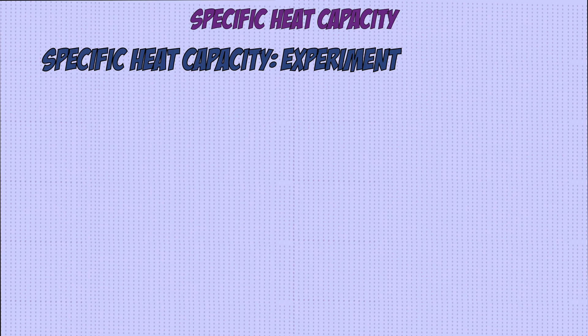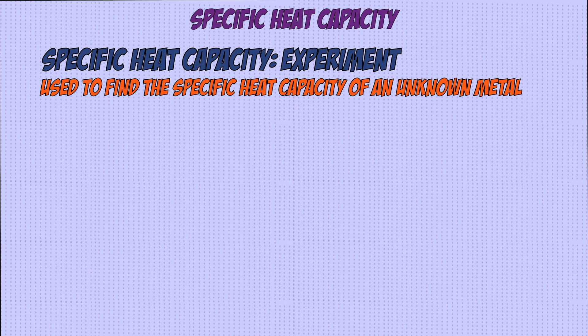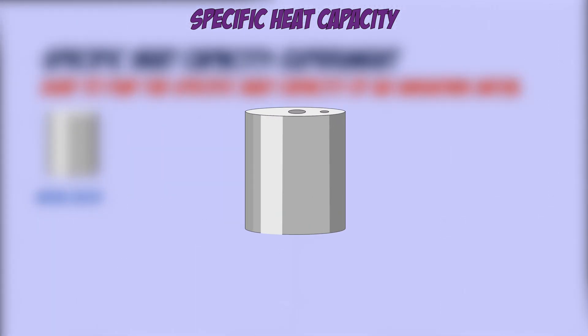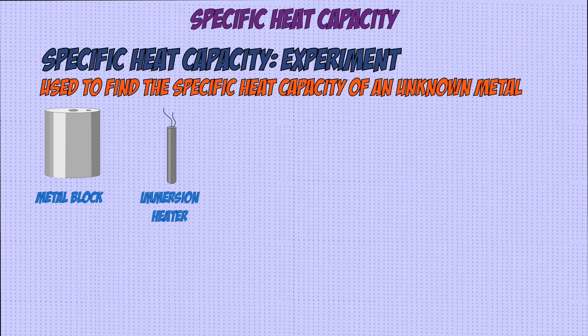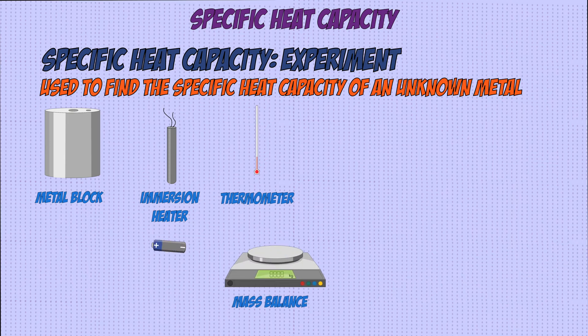Let's say we wanted to find out the specific heat capacity of a metal such as aluminium. The apparatus that you would need for this experiment includes the metal block you're testing, which would be aluminium in this case. This block would have two holes drilled into it: one to fit in the immersion heater to heat the block up, and another to fit a thermometer to measure temperature.